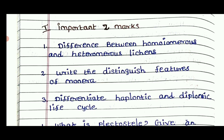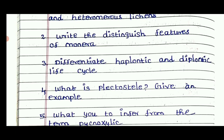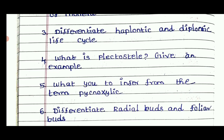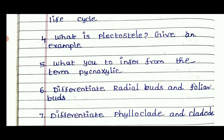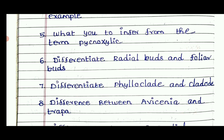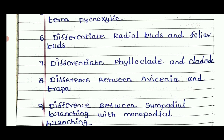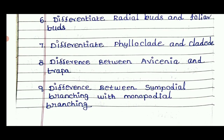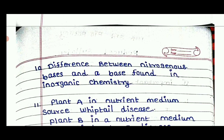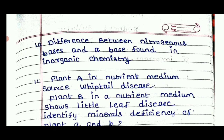The difference between homo and heteromeras is very important. Write the distinctive features — it is also important. The difference between haplontic and diplontic life cycle. What is plectosteel? Give an example. What do you infer in terms of the final six monostiches? The difference between adventitious buds and radical buds. The difference between phyllode and phylloclade. The difference between Avicennia and Trapa. The difference between sympodial branching and monopodial branching.